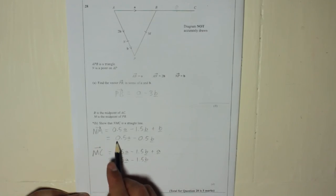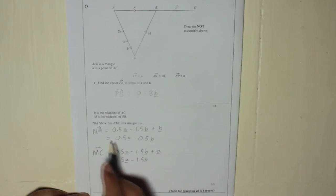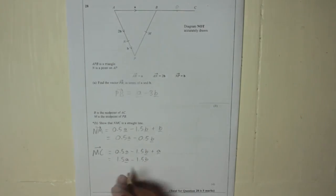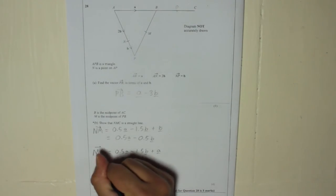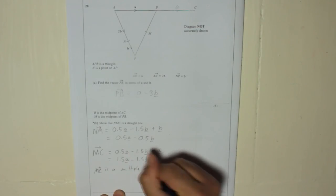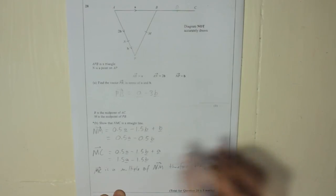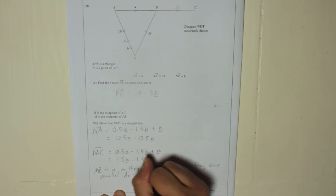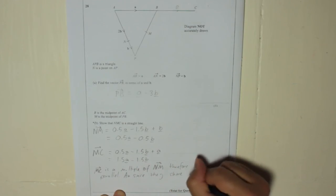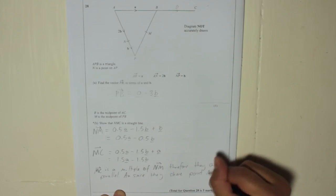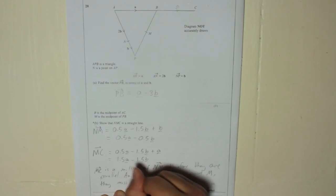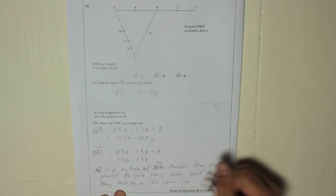If you look at NM, it was 0.5A minus 0.5B. MC is 1.5A minus 1.5B. That's been tripled and that's been tripled, so MC is a multiple of NM — it's three times as much. Therefore they are parallel, and since they share point M, they must be on the same line, so that line is straight.